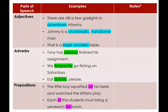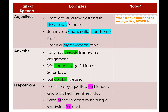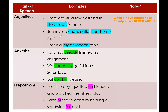Now we're moving to modifiers. Modifiers are not essential — we can always cross them out without damaging the sentence structure; the sentence will remain intact. In the first example, 'There are still a few gas lights in downtown Atlanta.' 'Downtown' is modifying 'Atlanta.' Some nouns can serve as adjectives when modifying other nouns. One important rule: when a noun functions as an adjective, never add S, even if it is originally countable. Don't say 'fields trip' — it's 'field trip.' In the second example, 'Johnny is a charismatic, handsome man' — these two adjectives modify 'man.'